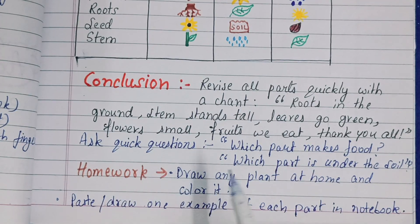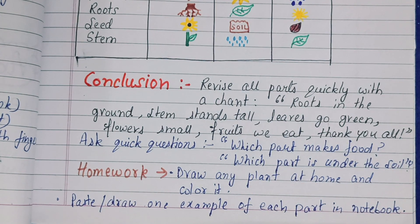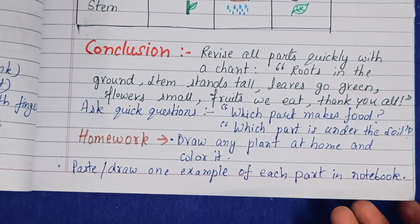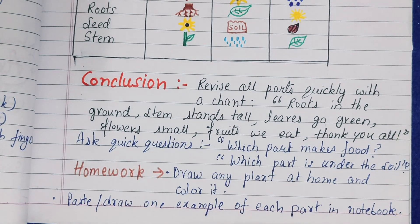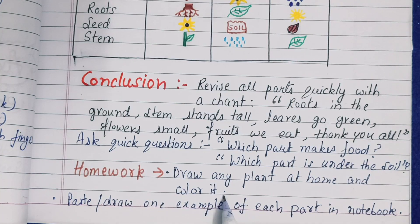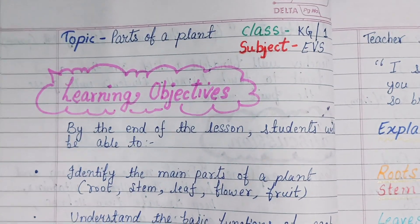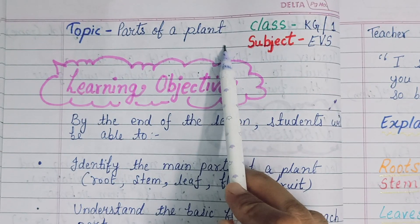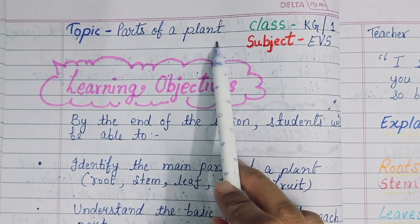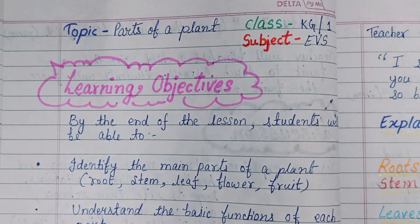You can ask questions: which part makes food? Which part is under the soil? For homework, draw any plant at home and color it, or paste or draw one example of each part in your notebook. This is the lesson plan of the parts of a plant — I hope you like my lesson. Kindly like and subscribe to my channel. Thank you.